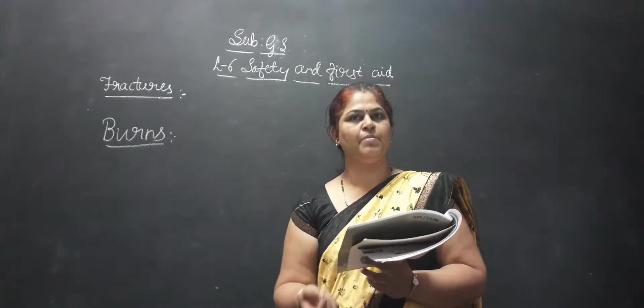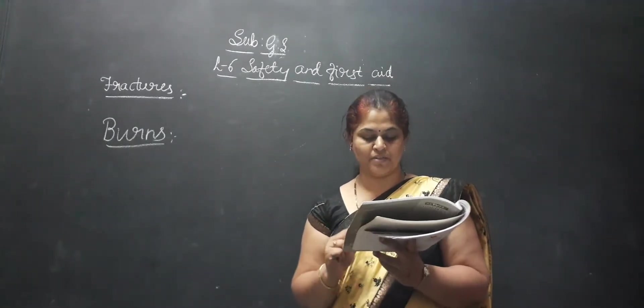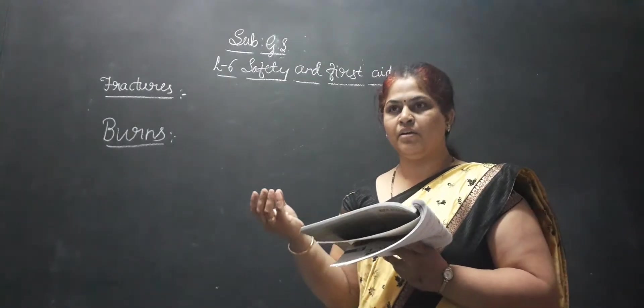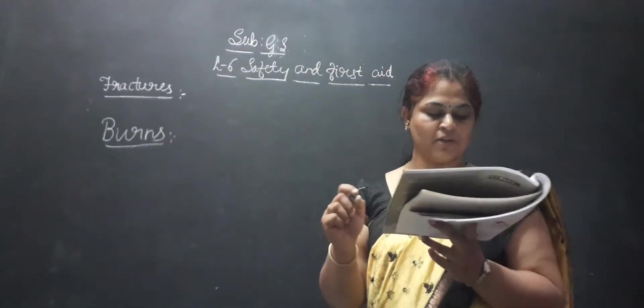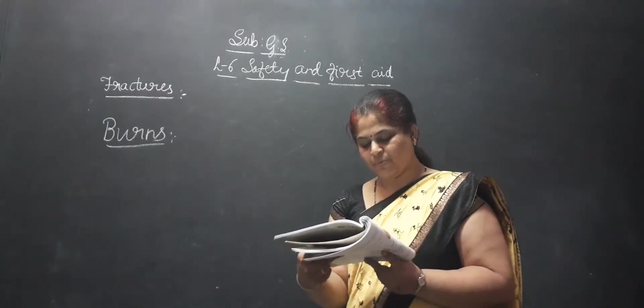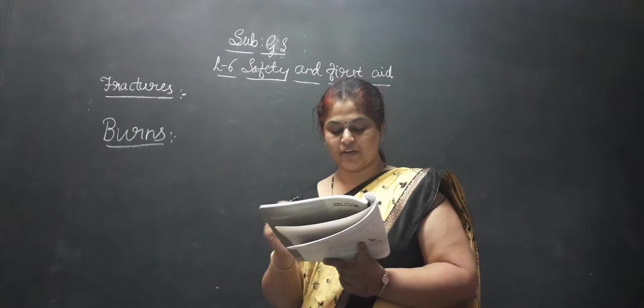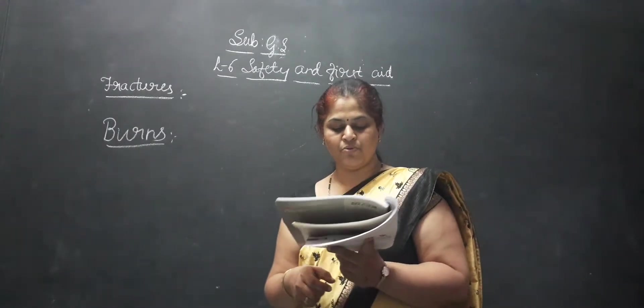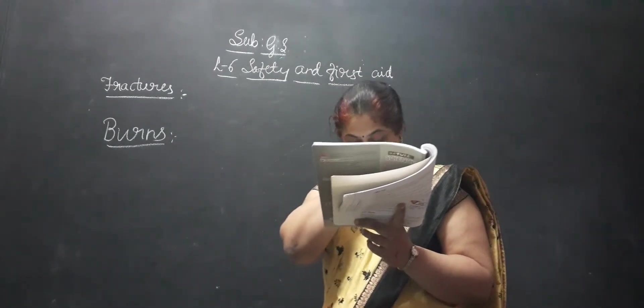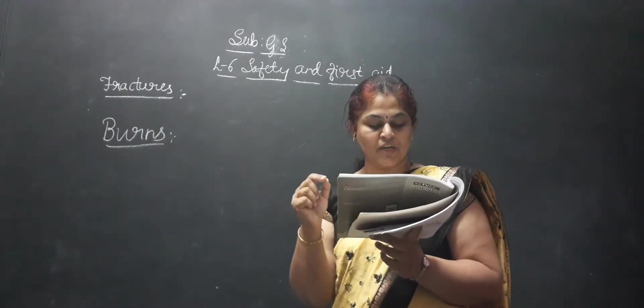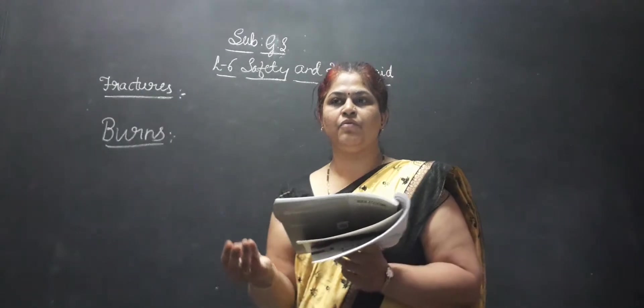Severe burns should be treated only by the doctor. Flow running water over the burn until the pain subsides. Prepare a solution of baking soda by adding a heaped teaspoonful to a glass of water. Dip cotton wool in this solution and apply it to the affected area. This will give relief from the burning sensation.